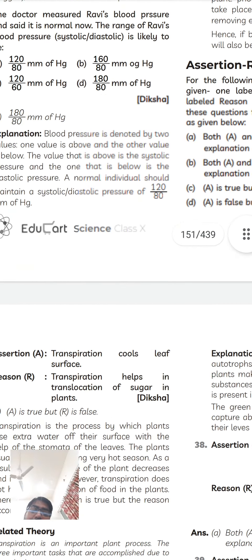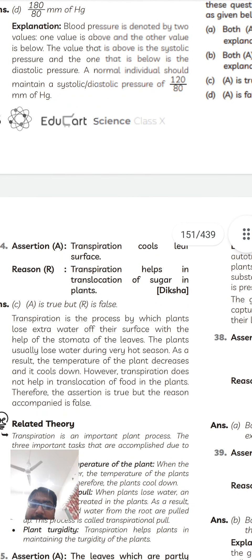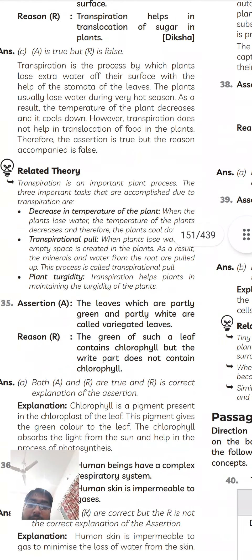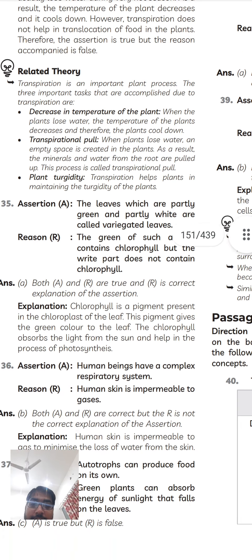The reason and assertion. Transpiration cools leaf surface, definitely already discussed, definitely true. Transpiration helps in the translocation of sugar. The leaves which are partly green and partly white are called variegated leaves, definitely correct. The green part of such a leaf contains chlorophyll but the white part does not contain chlorophyll, definitely correct. A and R correct, and R is the correct explanation of the assertion. Next question.